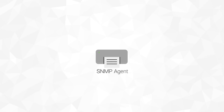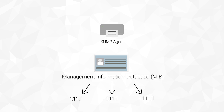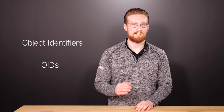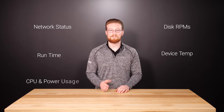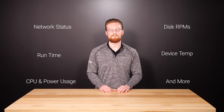The third component of SNMP lies inside the SNMP Agent. The MIB, or Management Information Database, is a database in a device containing data points specific to that device. These can be provided to, or configured by, a Manager. These data points are called Object Identifiers, or OIDs. Examples of OIDs include Network Status, Runtime, Disk RPMs, Device Temperatures, CPU and Power Usage, and other device-specific variables.